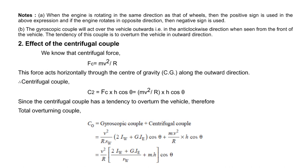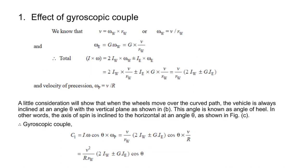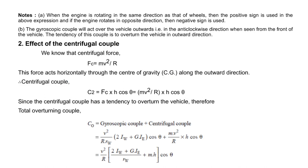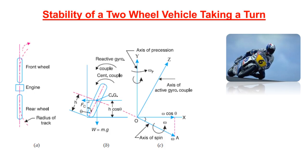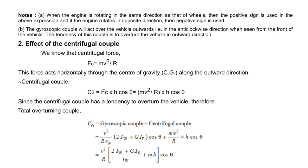Note that when the engine rotates in the same direction as the wheels, a positive sign is used in the equation; otherwise a negative sign is used. The gyroscopic couple acts on the vehicle in the outward direction — in the anticlockwise direction when viewed from the front of the vehicle — as shown in diagram B. The reactive gyroscopic couple similarly acts on the outer side (anticlockwise from the front), tending to overturn the vehicle outward.